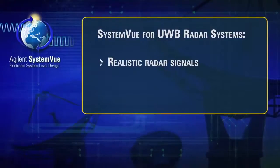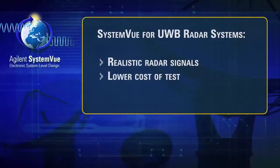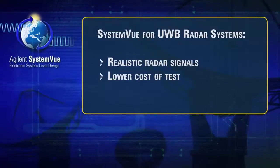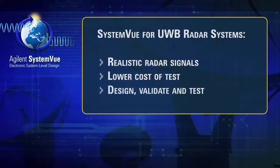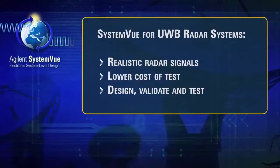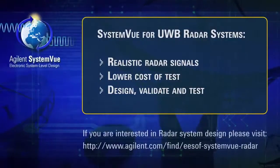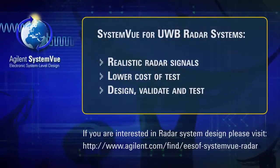We have shown how Agilent SystemVue, along with Agilent test equipment, is used to generate realistic UWB signals. This dramatically lowers the cost of testing radar systems and allows you to test at your convenience. SystemVue is a powerful system level design tool that takes you from design through validation and test of communications and defense systems. If you are interested in radar system design, please visit www.agilent.com and find esof-systemview-radar.